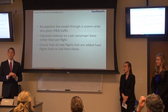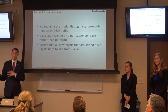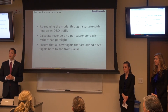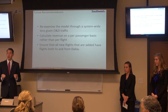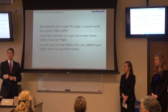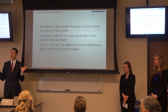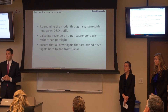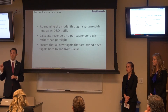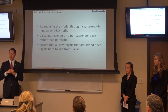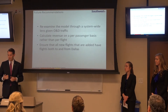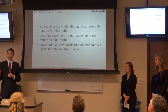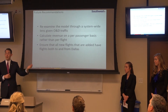As a team, we considered what we would change if we had more time or passed this to a future group. First, we'd re-examine the model through a system-wide lens given O and D traffic — on an average Southwest flight, about 60% of passengers terminate at their destination, while 40% connect onward. It would be valuable to have a more system-wide perspective. Additionally, we'd calculate revenue on a per-passenger basis rather than per flight, since there are variations beyond the load factor constraint. Finally, we'd ensure all new flights have both a corresponding arrival and departure, as our model sometimes added a departure to San Francisco without an equal return.